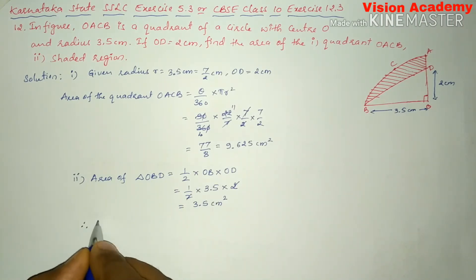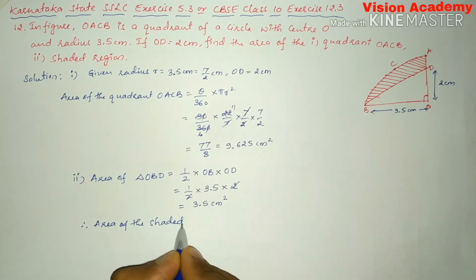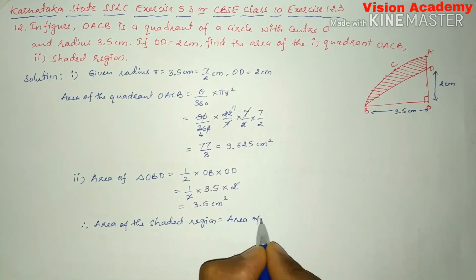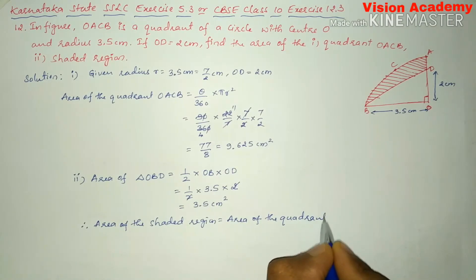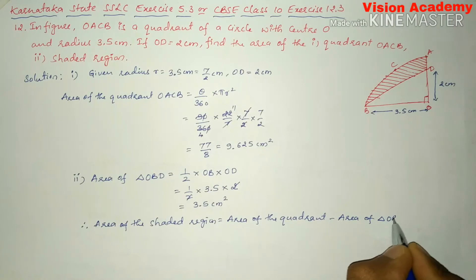Now we will write: therefore, area of the shaded region is equal to area of the quadrant minus area of triangle OBD.